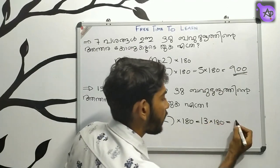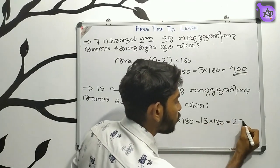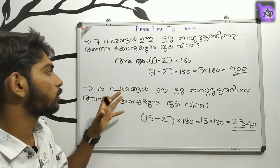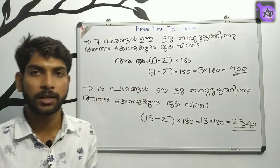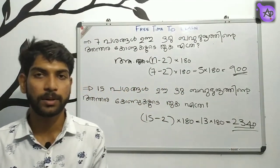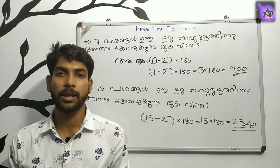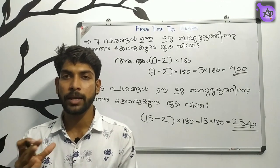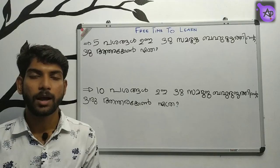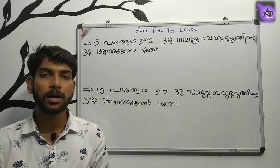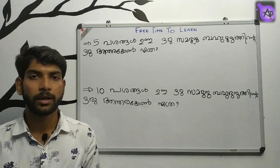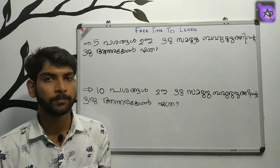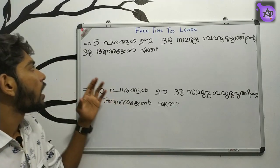15 minus 2 is 13. Now, 13 into 180. Let's take a look at this equation.